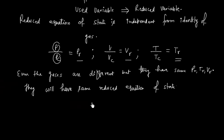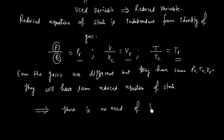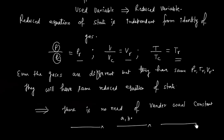The reason we use the reduced equation of state is that it does not require the Van der Waal constants A and B. The reduced equation of state is independent of those constants, making it universally applicable.